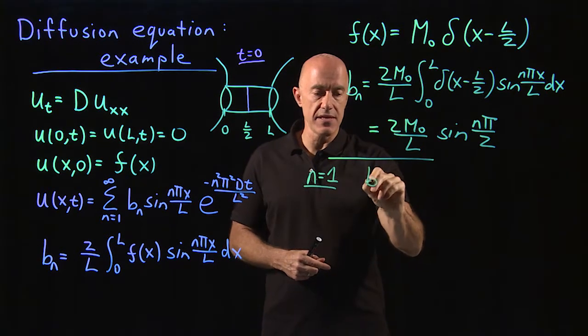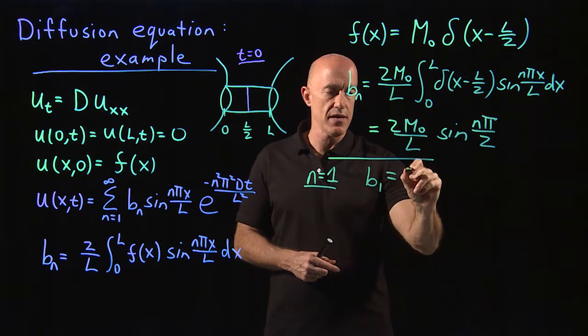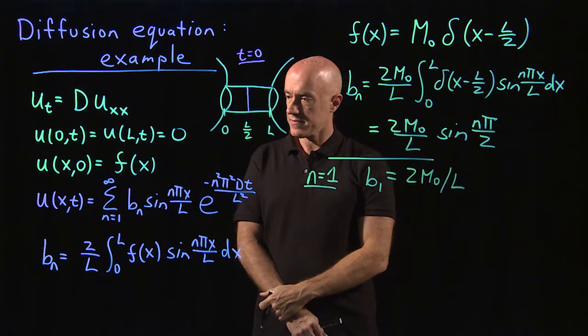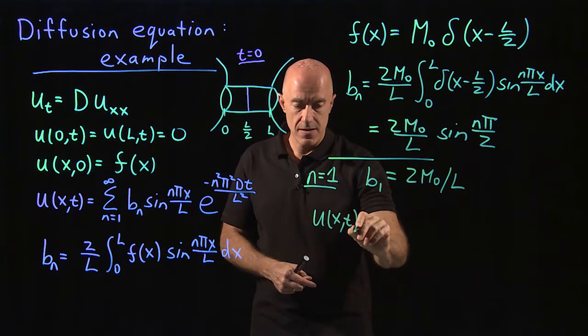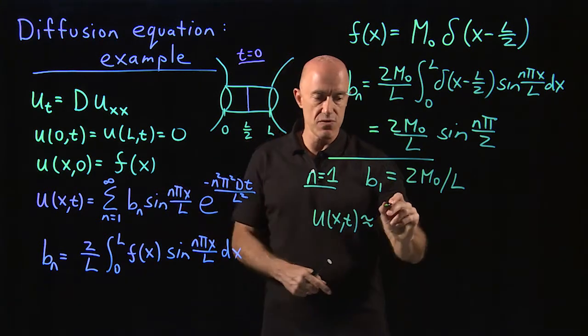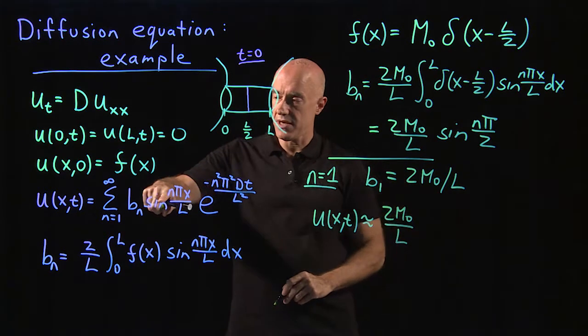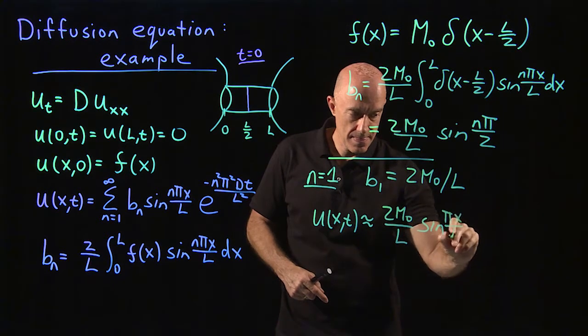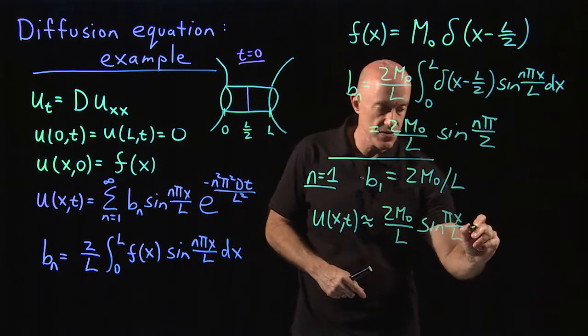That will be B sub one. N equals one. We have a sine pi over two is one. So that will be two M naught over L. And then U of XT then is approximately just the first term here, which will be two M naught over L times sine pi X over L times E to the minus pi squared DT over L squared.